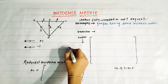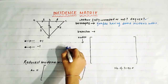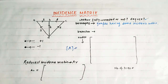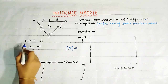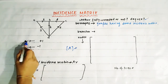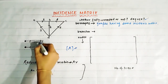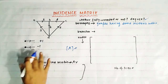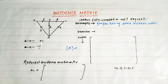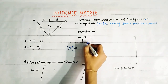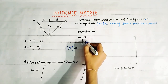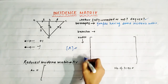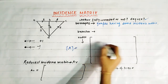To find the incidence matrix, we have to take a sign convention. If a branch is leaving the node, then we will take plus one, and if a branch is entering the node then we will take minus one. The rows of the incidence matrix correspond to the nodes of the graph.